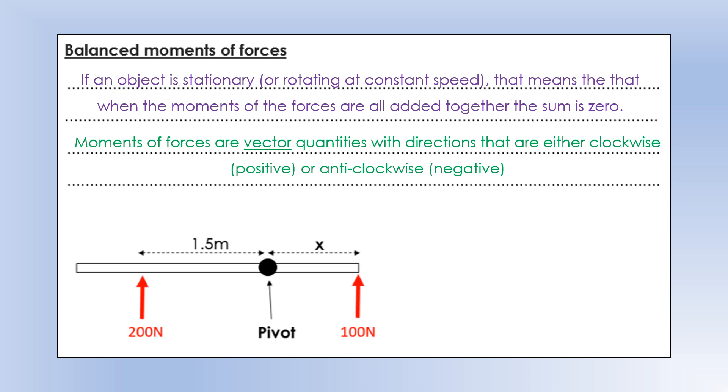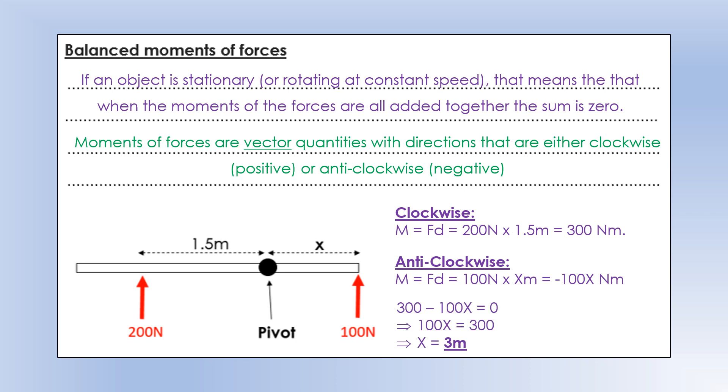Okay, so if we apply it to this scenario, this object is stationary and stays stationary. So we're going to work out the moments about the pivot of the two forces, and those should add together to give you zero. So the clockwise moment is going to be 200 times 1.5. You can see that force is trying to make this plank rotate clockwise. The anticlockwise is the 100 Newton moment, and that's going to be multiplied by x, because we don't know what that distance is. And that one's anticlockwise, so we're going to assign it a negative number. So when we add those two moments together, that should equal zero, because it's stationary and staying stationary. And that means we can get, or find, what x is, it's going to be three meters, or twice as far away as the 200 Newton force.